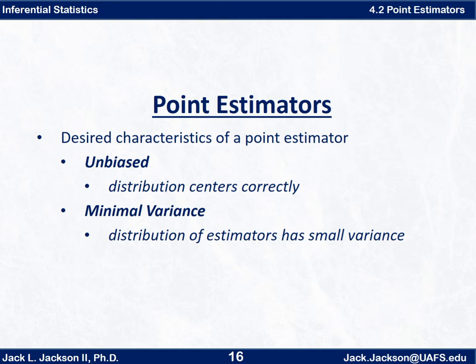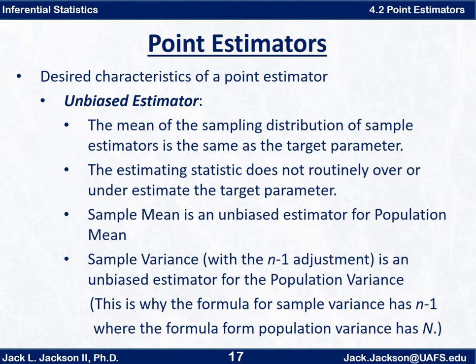Now when you're using a particular statistic to estimate some population parameter, there are a couple of characteristics you want it to have. You want it to be unbiased and have minimal variance. Unbiased means that the distribution of statistics is centered correctly, and minimal variance means it has a small variance.